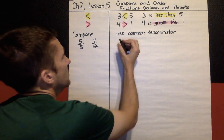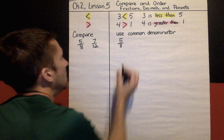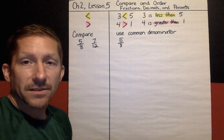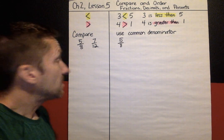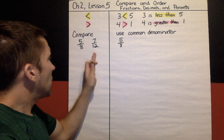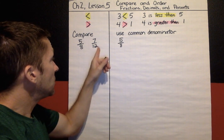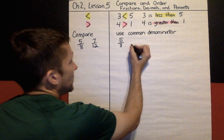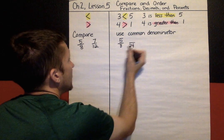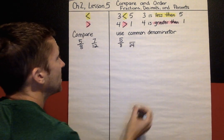To do that, I'm going to think about eight and twelve, my denominators. If I count by eights: eight, sixteen, twenty-four, thirty-two. And if I count by twelves: twelve, twenty-four. The first match I come to is twenty-four. So I'm going to change eighths and twelfths into twenty-fourths.